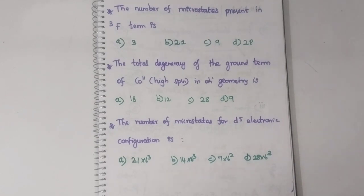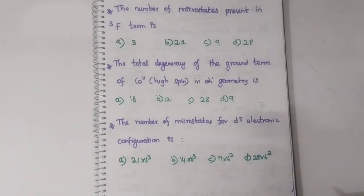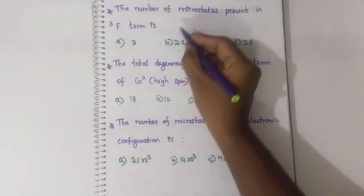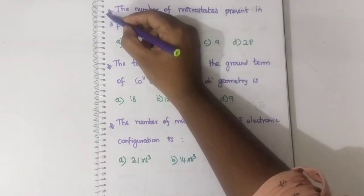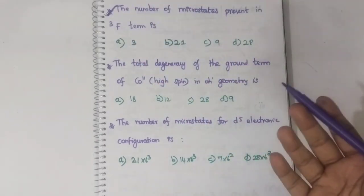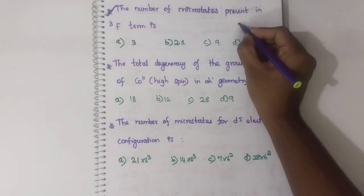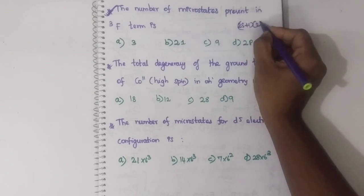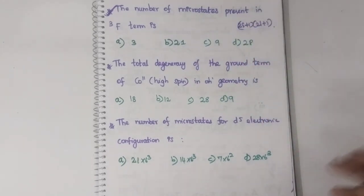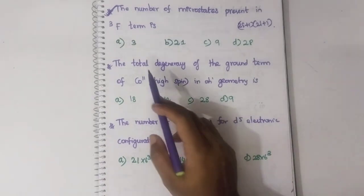Now let us solve the previous year questions. The first question: the number of microstates present in the 3F term. They have given you a term, so the formula to calculate microstates is (2S+1) into (2L+1). Substitute the values and tell me the answer in the comment section.